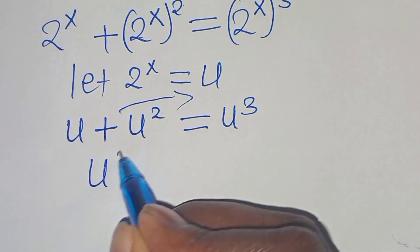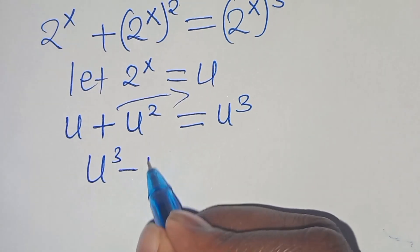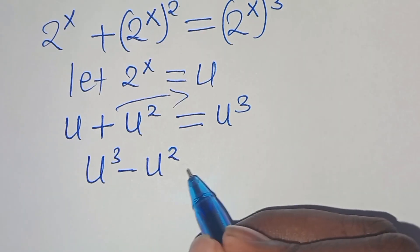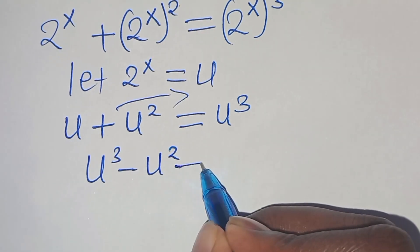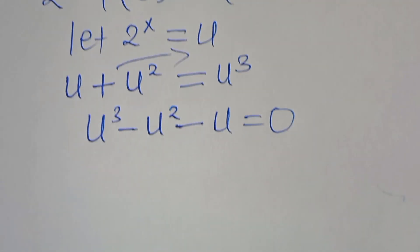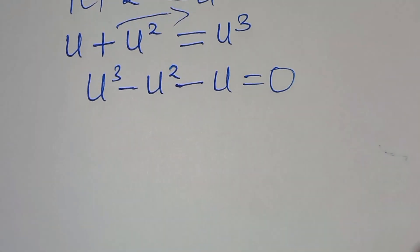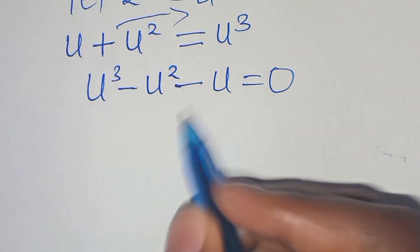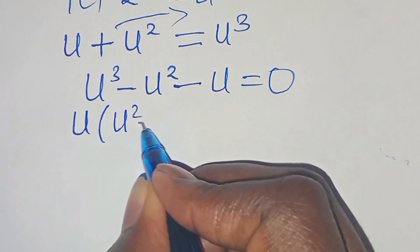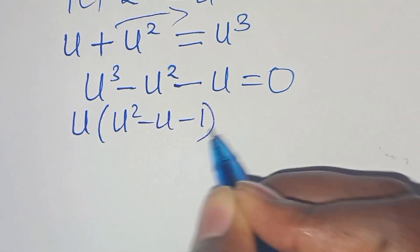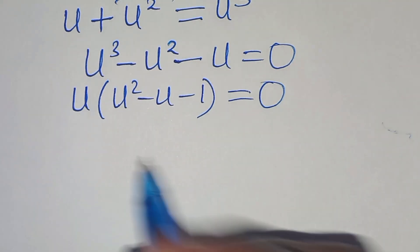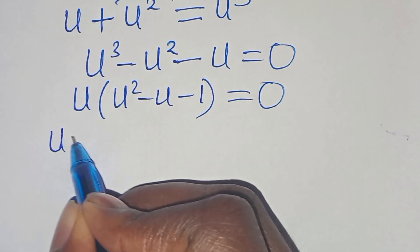Now, letting u = 2^x, we obtain the equation u³ - u² - u = 0. The next step is that u is common here, so we can factor out u, so that we have u times (u² - u - 1) = 0.